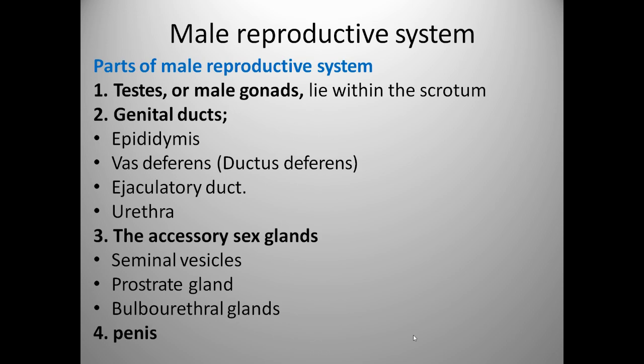First, we will see the parts of the male reproductive system. These are the testis, or male gonads, that lie within the scrotum, and genital ducts — that is the epididymis, vas deferens, ejaculatory duct, and urethra. The accessory sex glands are the seminal vesicles, prostate gland, and bulbourethral gland, and the penis.